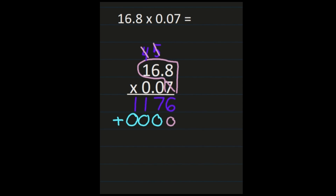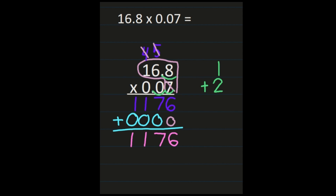I'm not going to multiply by that next 0 because I'll just get another row of zeros. So let's add: 6 plus 0 is 6, 7 plus 0 is 7, 1 plus 0 is 1, and 1 plus 0 is 1. Now we need to place our decimal. I'll count the digits behind the decimal in both factors: one digit in 16 and 8 tenths, and two digits in 7 hundredths, for a total of three digits. So I'll move my decimal point three places to the left, giving a product of 1 and 176 thousandths.